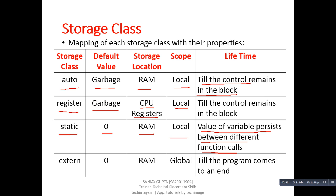The last one is external. In case of external: default value is zero, storage location is RAM, and scope is global — meaning an external variable can be accessed inside the whole program. Its lifetime is till the program comes to an end, meaning as long as the program is executing, we can access the value of an external variable anywhere in the program. So this is all about storage classes, thank you.